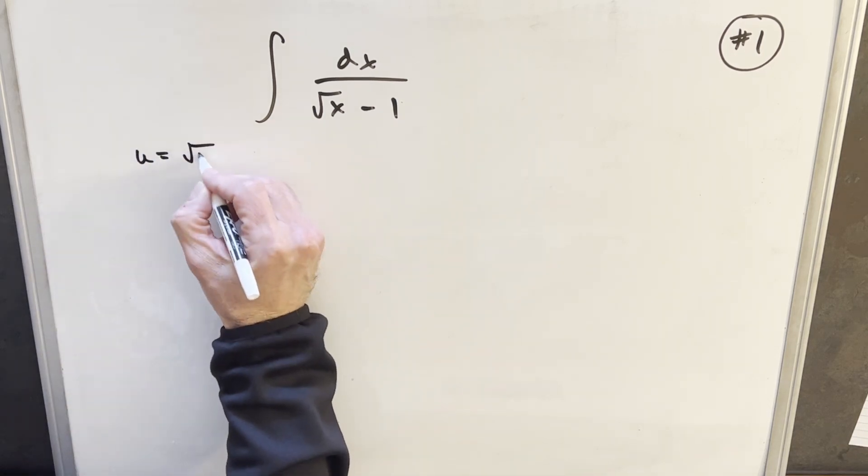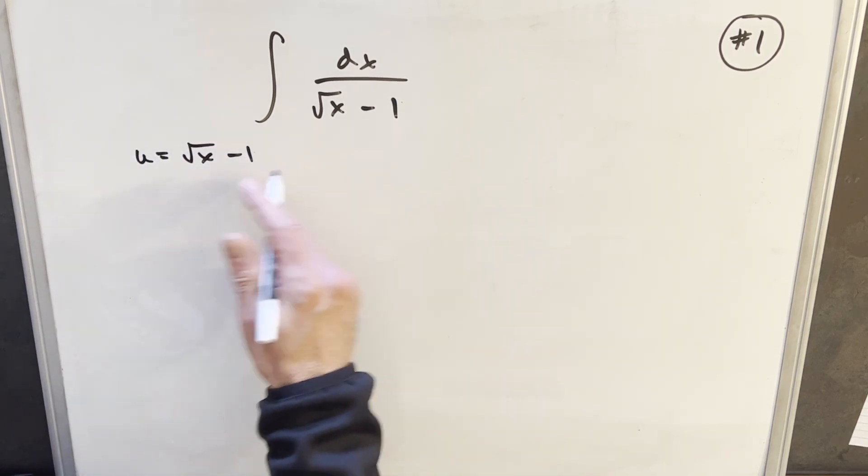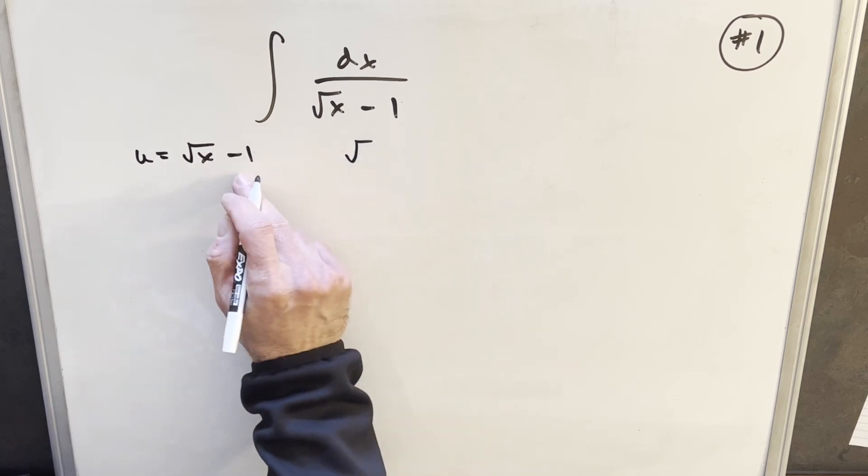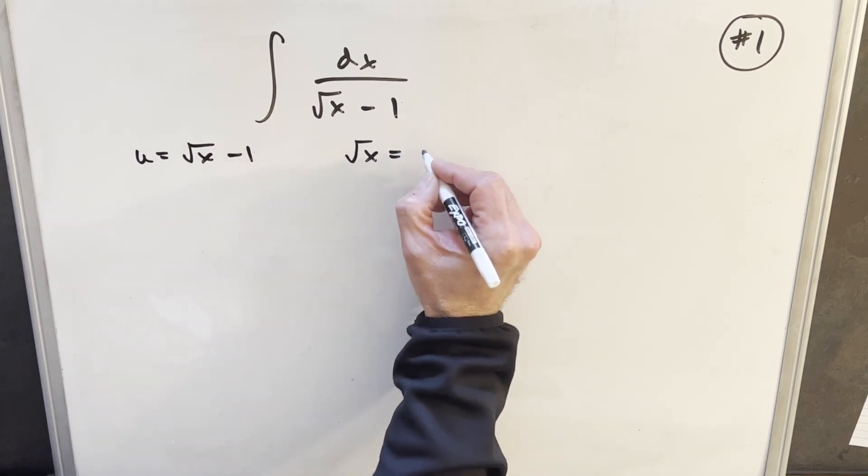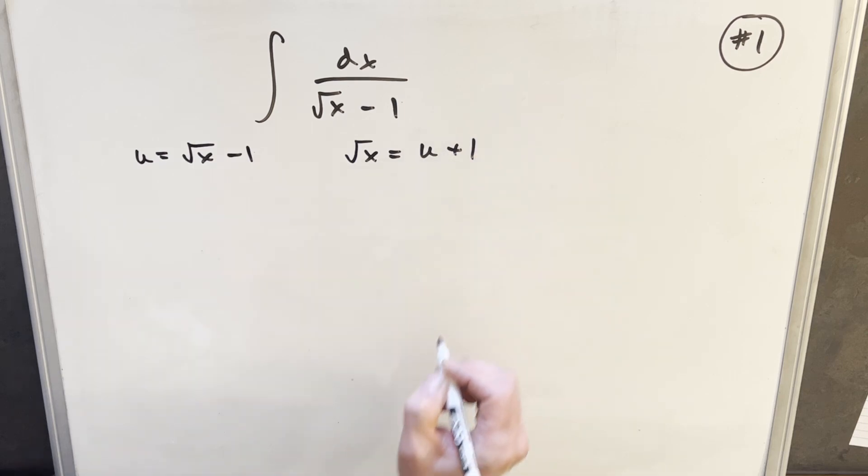I'm going to make u equal to square root of x minus 1. Then I'll solve for square root of x by adding 1 to both sides, so square root of x equals u plus 1.